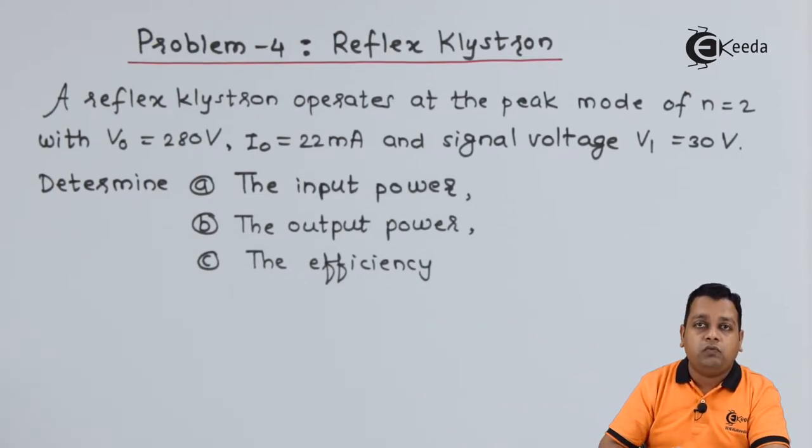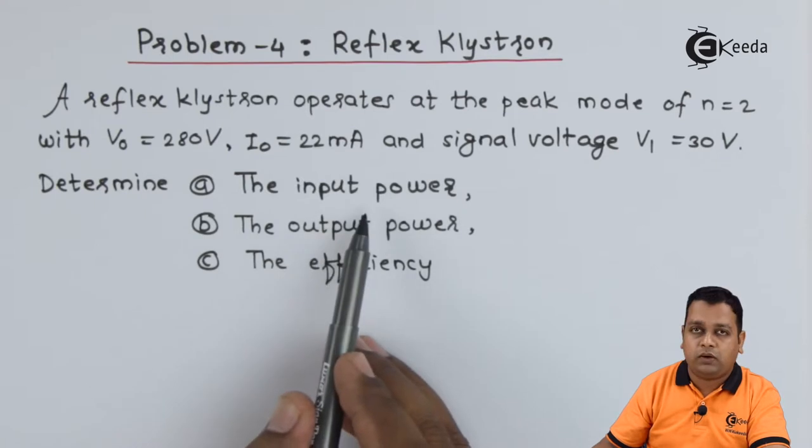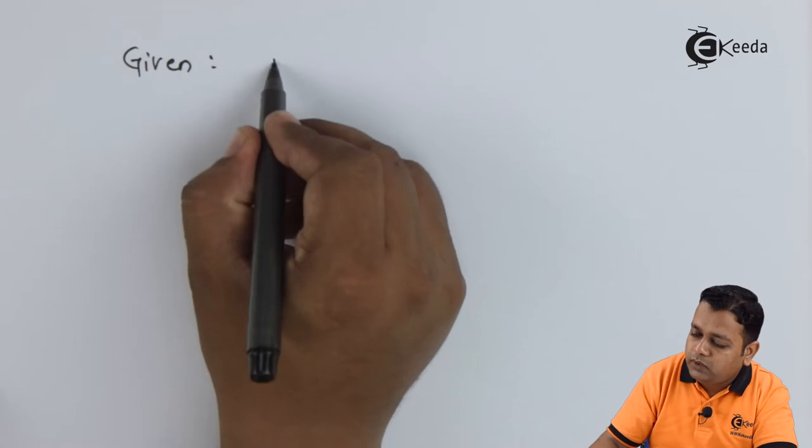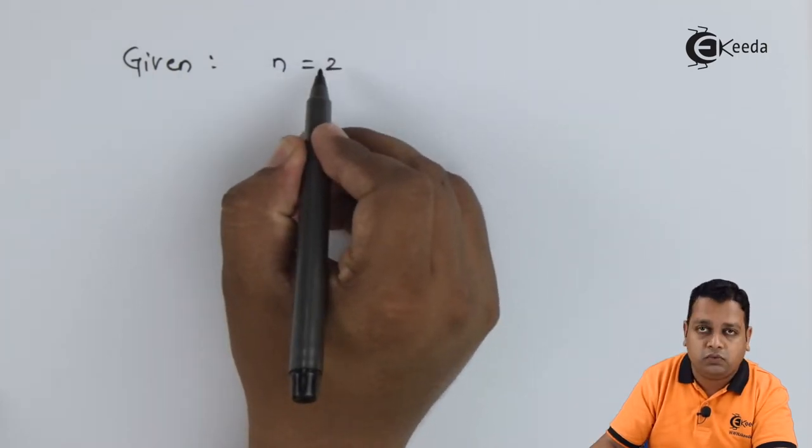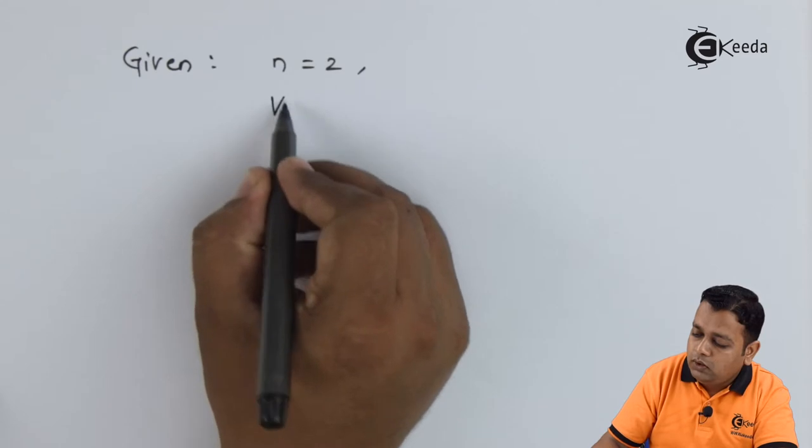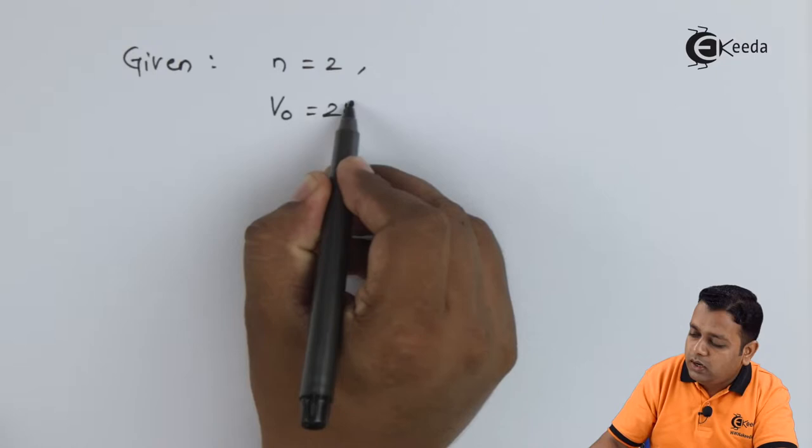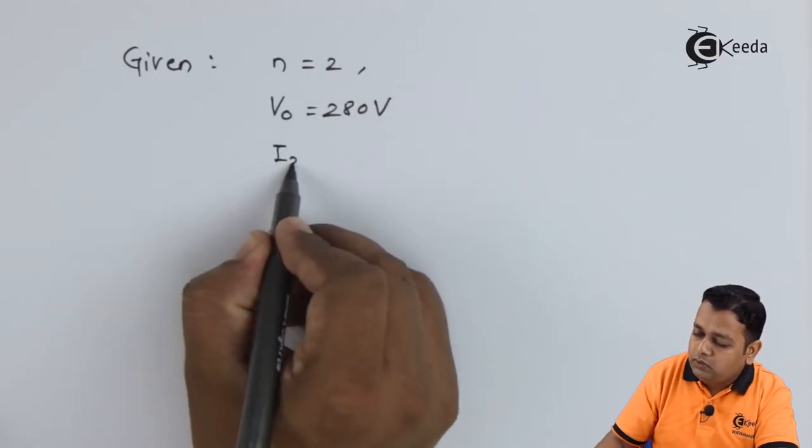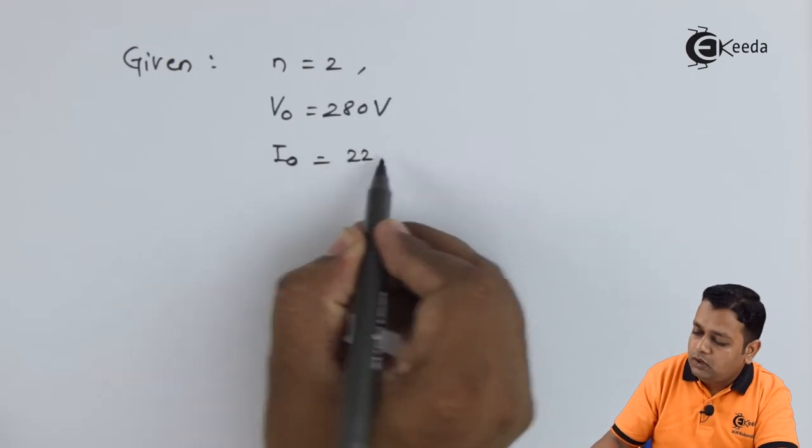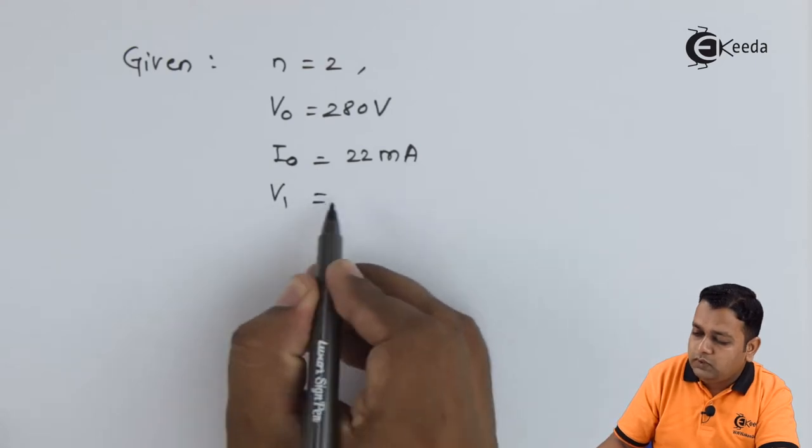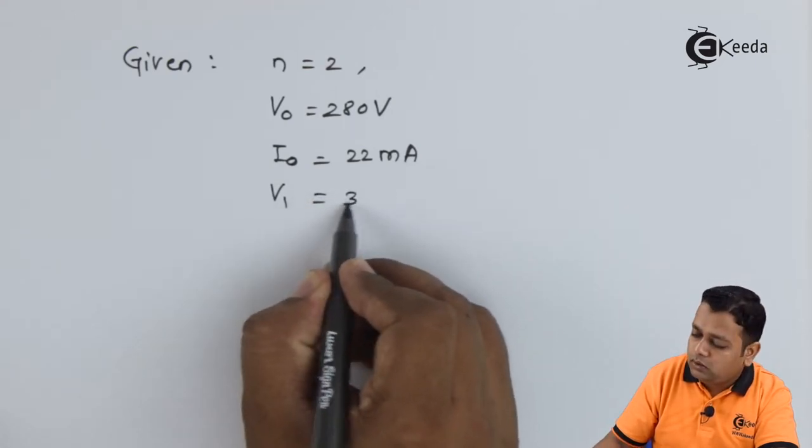So the problem is very simple. We begin to start for solving input power. So from the given problem statement we first of all note what is the given data. So here the given data is mode n is equal to 2. Next to that we have the DC potential V0 given by 280 volts. I0 the beam current is given as 22 milliampere and the V1 signal is equal to 30 volts.